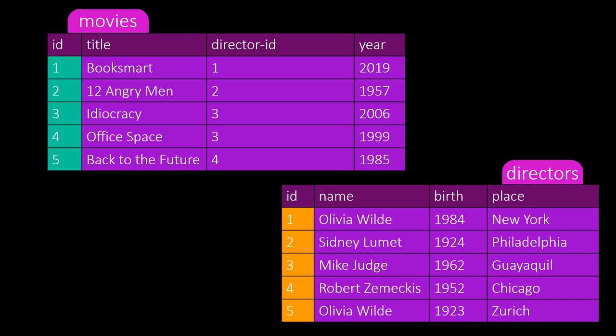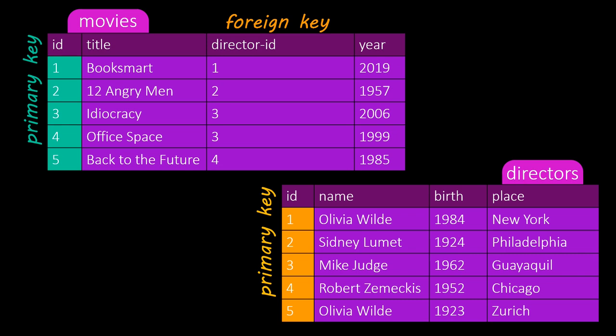These IDs are called keys. The unique ID associated with each row is called the primary key. Columns referring to primary keys of other tables are called foreign keys. Here, the director ID column in the movies table is a foreign key referring to the primary key of the director's table.